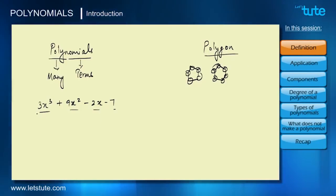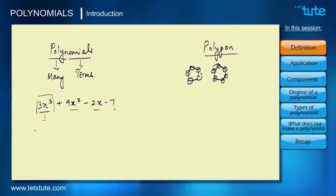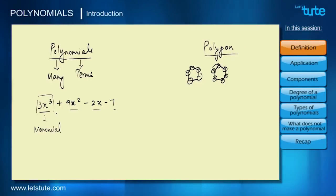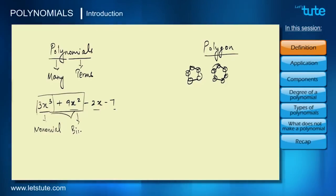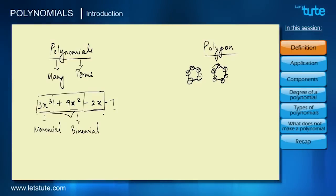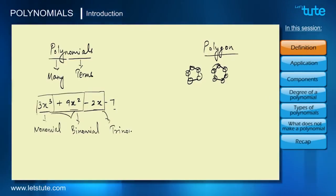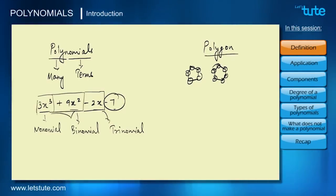What about expressions with fewer terms? If we only had 3x³, that would be called a monomial. Similarly, if we had 3x³ and 9x² together, it would be called a binomial. And if we have three terms, then it is called a trinomial.